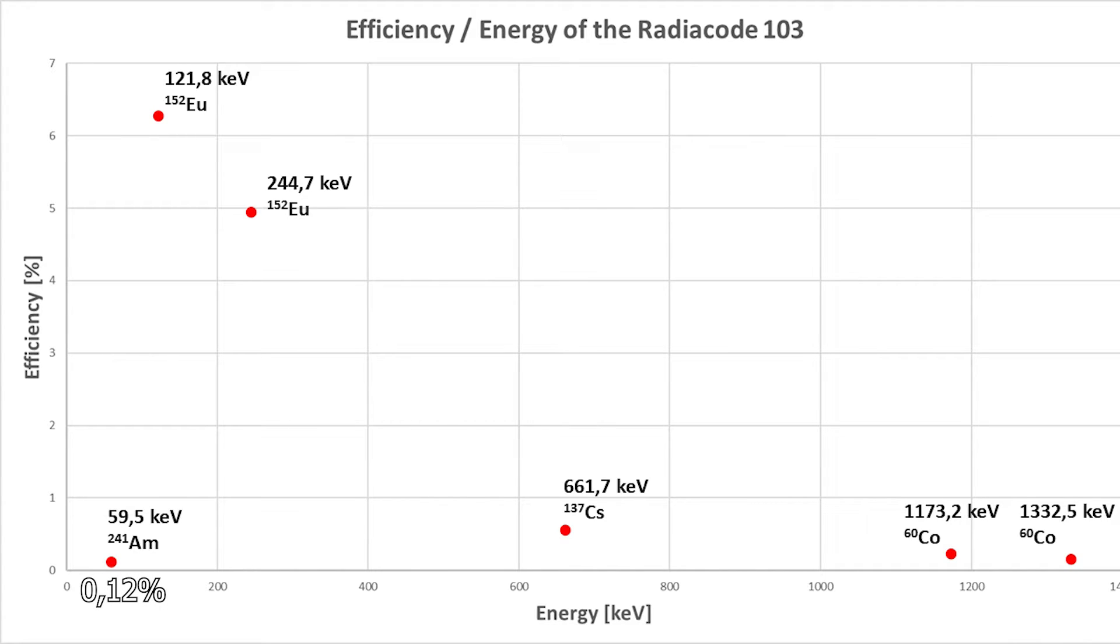For the americium line, I got an efficiency of 0.12%. At 122 kilo electron volts, I got 6.27%. At 244 kilo electron volts, I got an efficiency of 4.84%. At 661 kilo electron volts, we had an efficiency of 0.56% and it greatly decreased to 0.23 and 0.15 in the higher energy range.